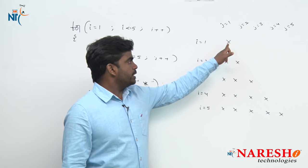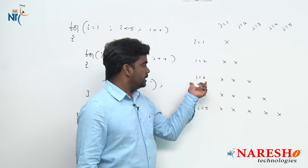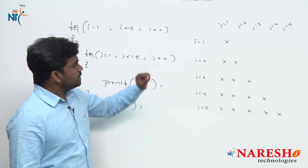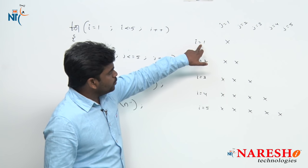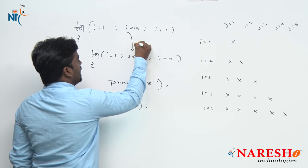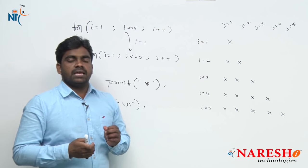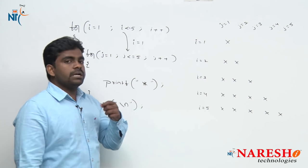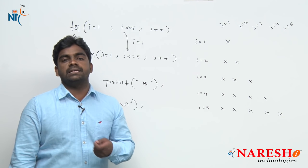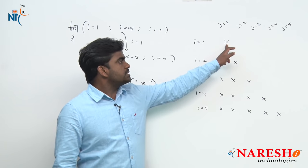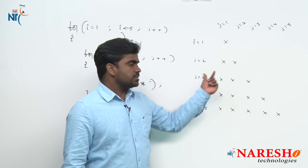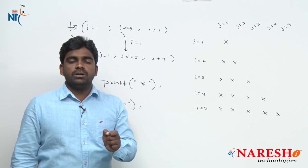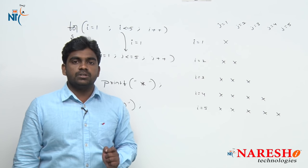Now I want to print another pattern. In the first row, print only 1 star; second row, 2 stars; third row, 3 stars; fourth row, 4 stars; fifth row, 5 stars. Notice: when i equals 1, the inner loop previously repeated 5 times, but now it should repeat i times. When i is 1, print 1 star; i is 2, print 2 stars — that is, i stars. So the inner loop should execute depending on the value of i.